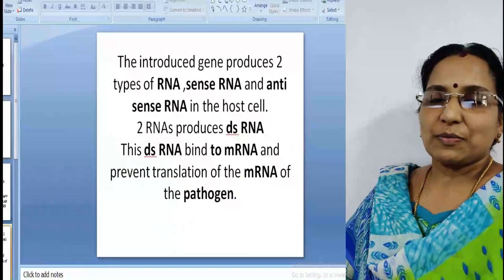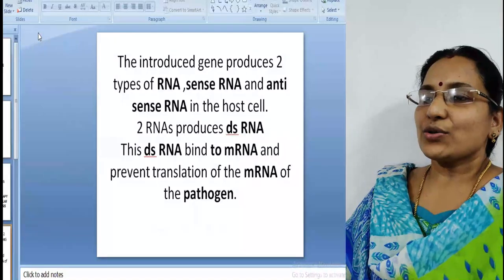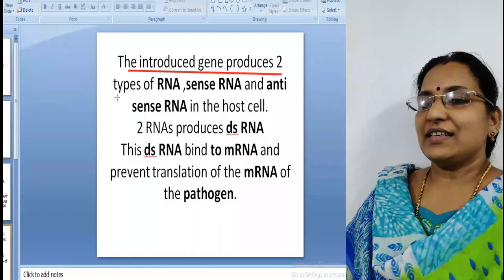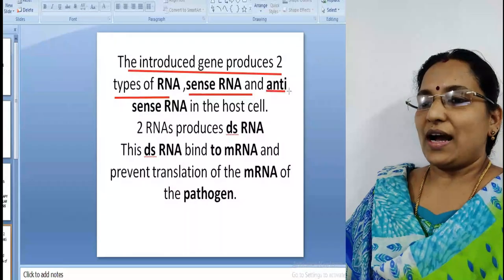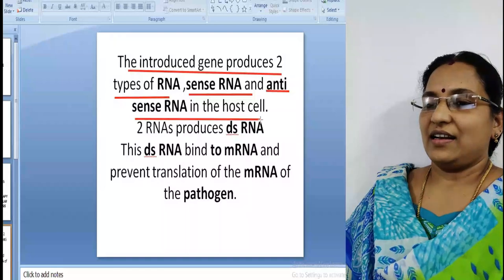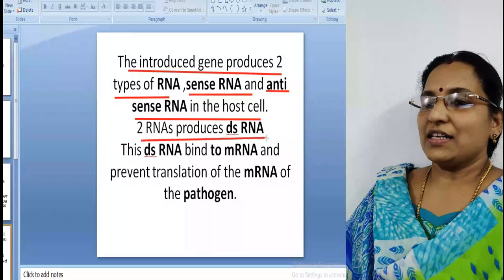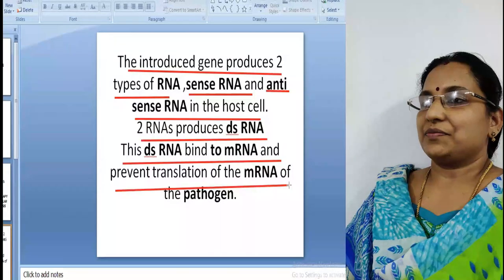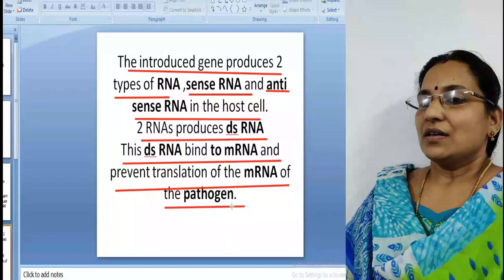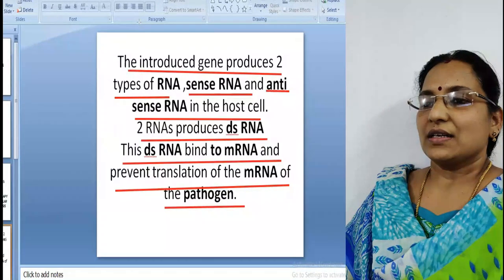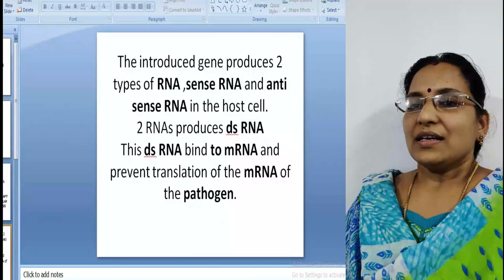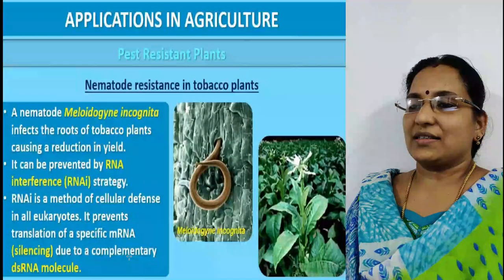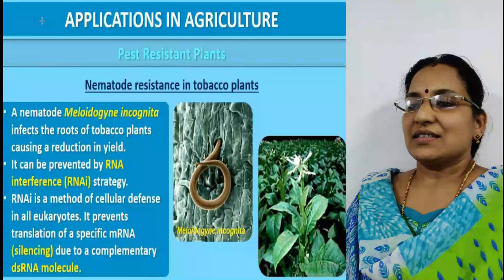To carry out this process through biotechnology, the introduced gene produces two types of RNA - sense RNA and antisense RNA - in the host cell. These two RNAs produce double-stranded RNA. This double-stranded RNA binds to messenger RNA and prevents translation of the messenger RNA of the pathogen. This process is mainly done to create nematode resistance in tobacco plants.